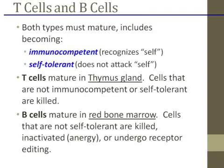Now, two important concepts: immunocompetence and self-tolerance. This is where we learn how to recognize self and how not to attack the self. We don't want cytotoxic T cells recognizing Class 1 MHCs on normal cells and then attacking them. It has to recognize the Class 1 MHC and then also ignore it — not mount an attack.